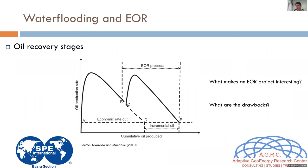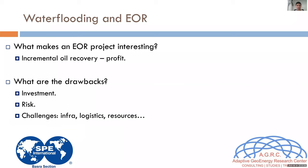We have a variety of EOR projects: WAG in offshore fields in Brazil, polymer in China and Argentina, CO2 in the U.S., and many projects in different locations. But all of them want the same thing — to increment oil recovery, recover more or recover faster — which translates into profits, more revenues, or getting revenues in a shorter time.